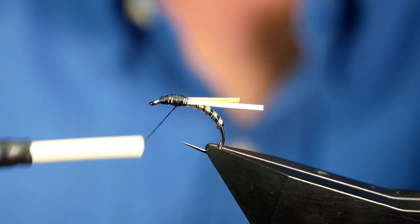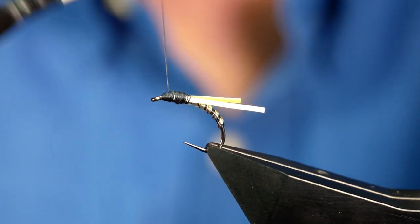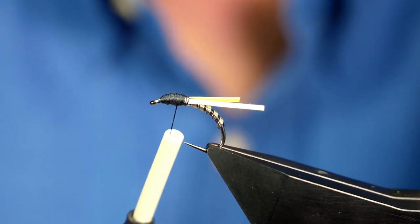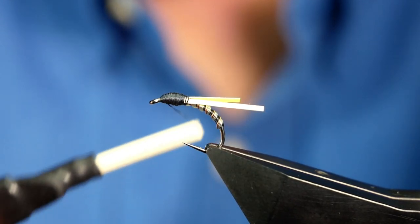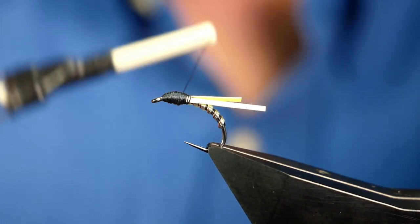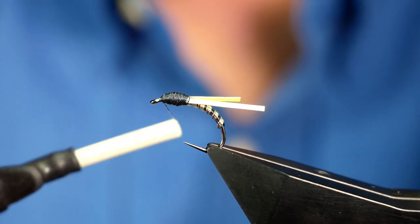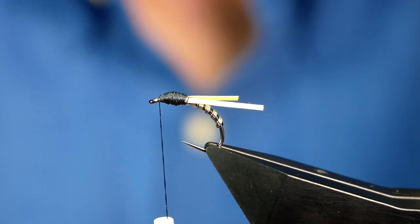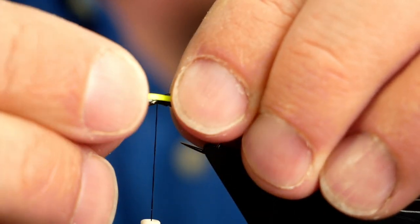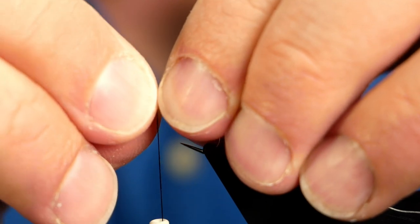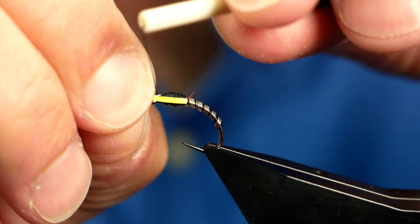So I'm just building up my thorax now. I like to get a nice sort of rugby ball shape with all the buzzer patterns I tie. And with a 140 denier you can do that a lot quicker. So I've got that into a nice shape that I like. I'm going to pull my cheeks around over the front of the eye. And then I can capture them in.